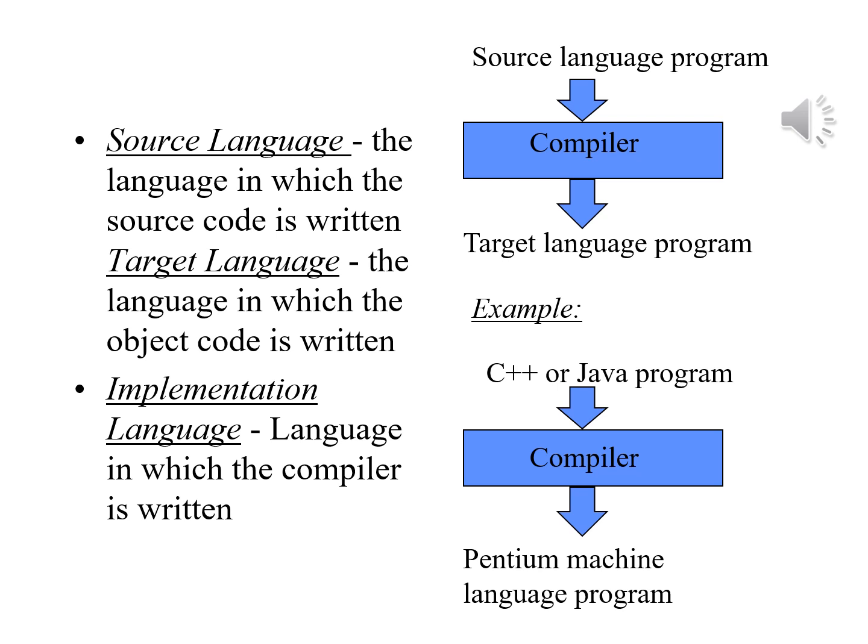When we think about writing a compiler, there are actually three separate languages we think in terms of. The source language is the language in which the source code — the version of the program the programmer wrote — appears in. Then there is the target language, the language into which the object code is written. Usually it will be the low-level machine language code for a given computer, but it could be assembly language or something like byte code. And there's also the implementation language — the language in which we actually write the compiler.